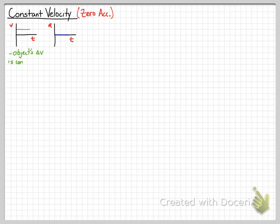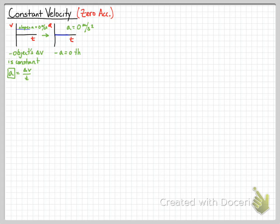Here we have a velocity versus time graph where the object's change in velocity is constant — not going up, not going down, it has no slope. The acceleration equals the change in velocity over time, and the slope of this graph is zero. So my acceleration is zero meters per second squared, which means there is no change in velocity. Change in velocity equals zero.